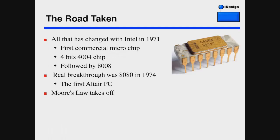All that changed with Intel in 1971. Intel developed the first commercial microchip, called the 4004 — a 4-bit computer. It was followed a year later by the 8008, which was simply two 4004s concatenated together. But the real breakthrough was the 8080 in 1974. The 8080 was the world's first PC — it powered the first PC. At that point there was commercial viability of producing mass numbers of computers, and Moore's Law takes off.